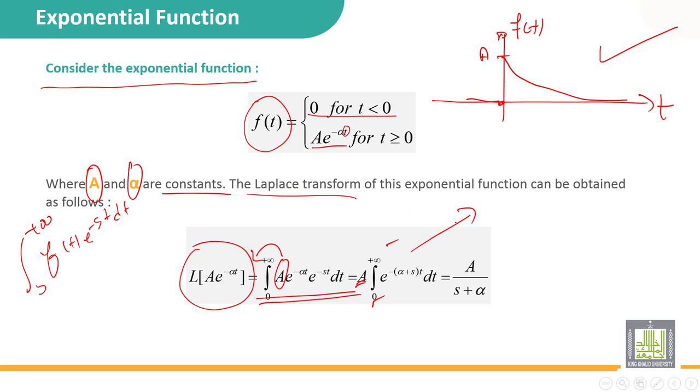Here I can make an extra step. I have the integral from 0 to plus infinity of A e^(-αt) multiplied by e^(-st) dt.